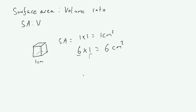What about the volume? The volume is calculated by length times width times depth, which equals one times one times one, giving us one centimetre cubed. And so the surface area to volume ratio is six to one. Sometimes you'll see that written as just six, where the surface area is divided by the volume.